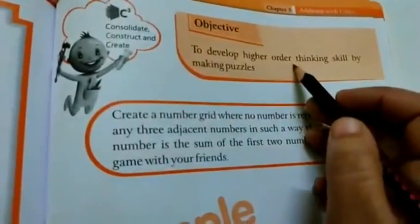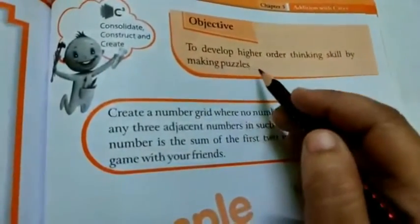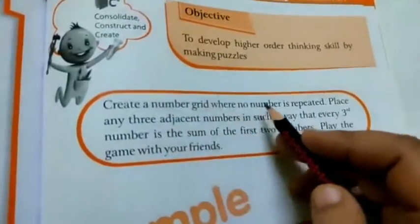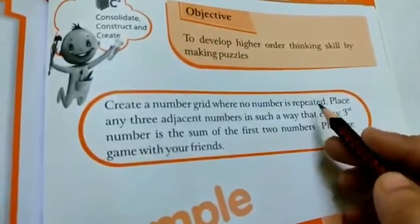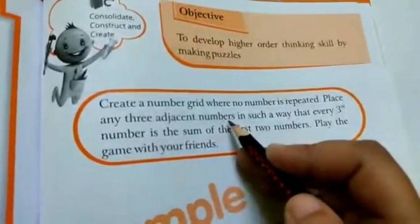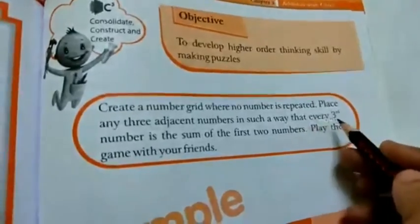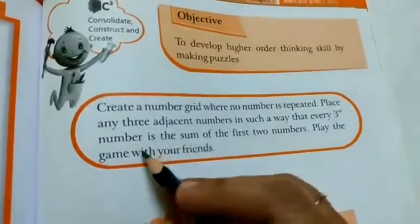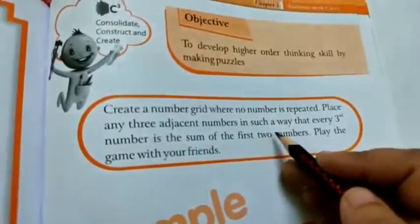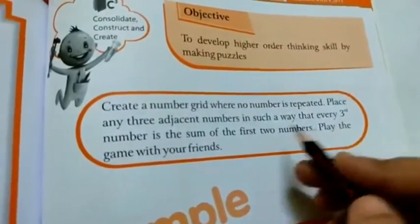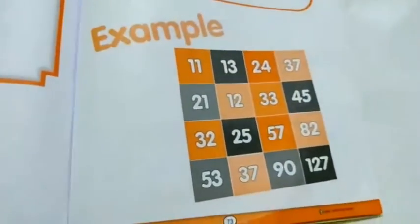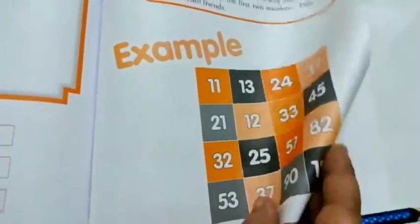Then to develop higher order thinking skill by making puzzles. Create a number grid where no number is repeated. Place any 3 adjacent numbers in such a way that every 3rd number is the sum of the first 2 numbers. Play the game with your friend. For example, you have to make a like this grid. Draw a grid created by you in the space given below. You have to make a grid like this here.